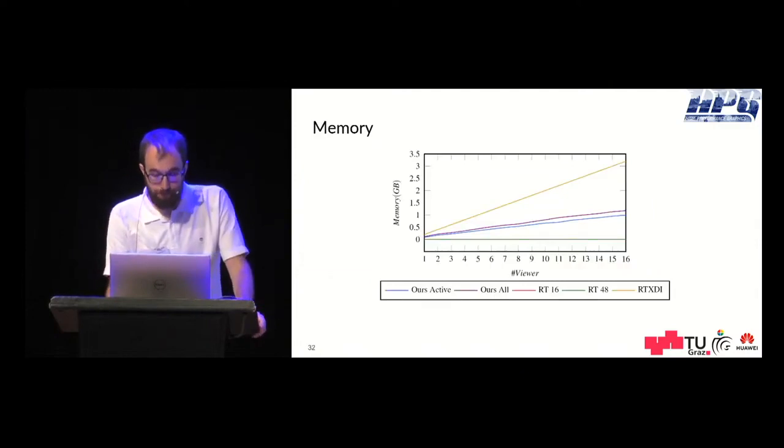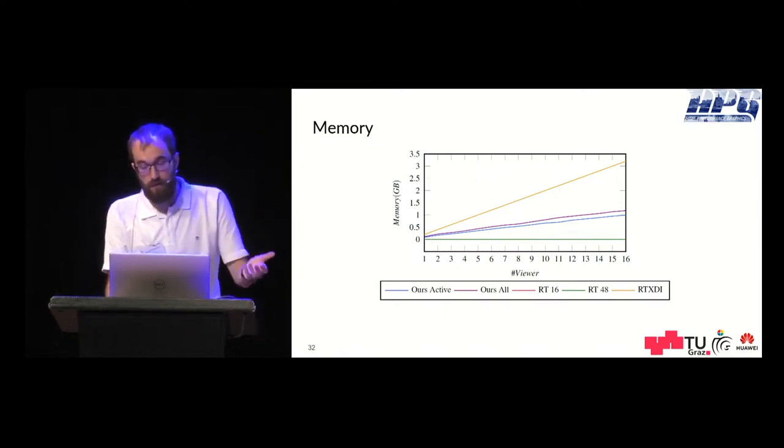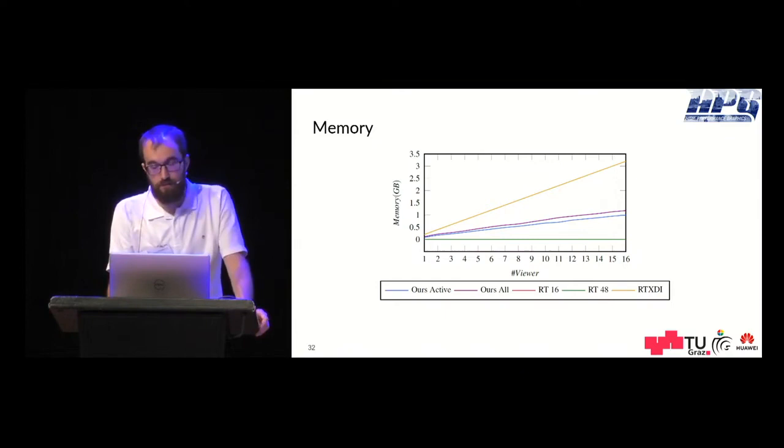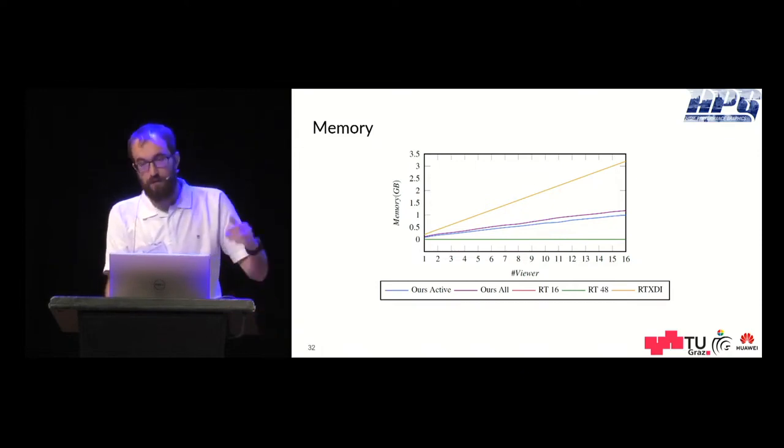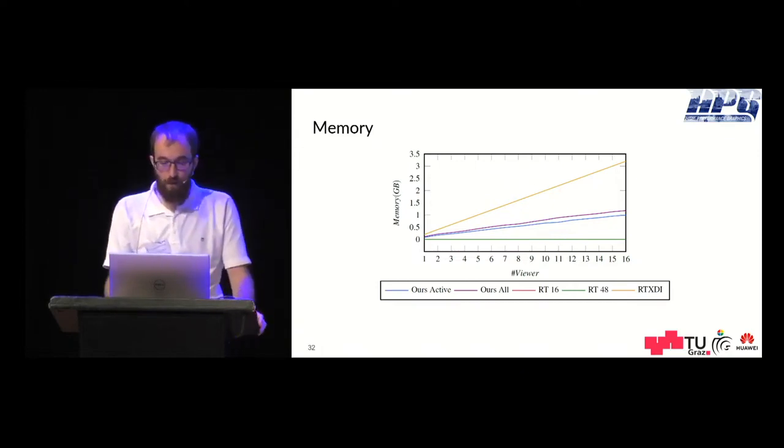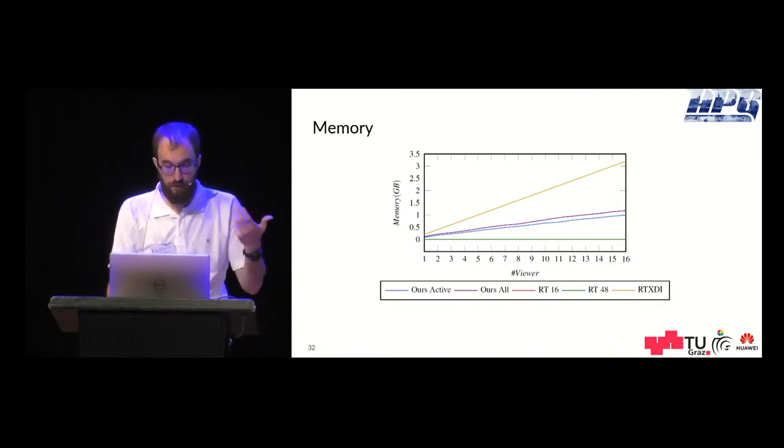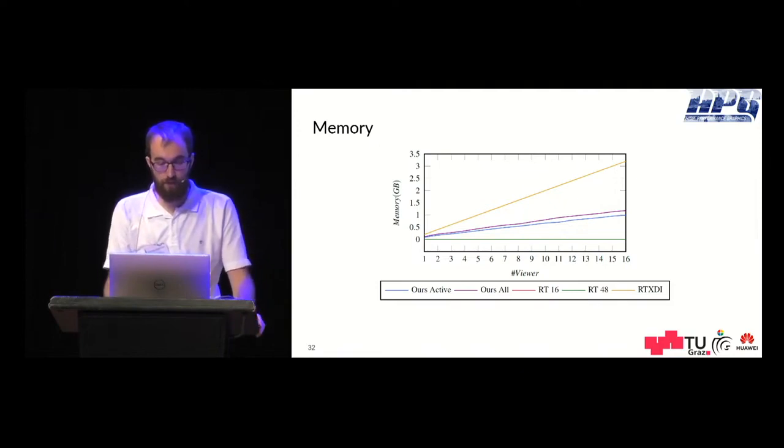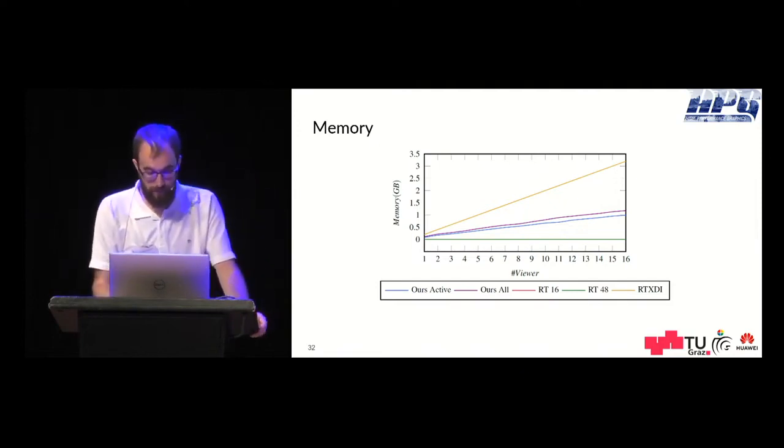So talking about memory. Here you see a memory graph for the Sponza scene where you can see that the ray traced version doesn't use additional memory because it doesn't keep track of anything between frames. And you see that ours increases steadily while RTXDI always doubles in memory because it always needs to keep track of the screen space parameters.